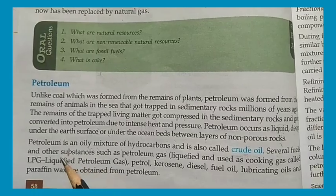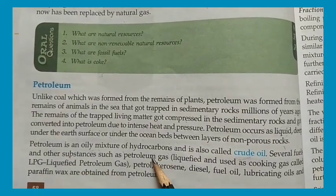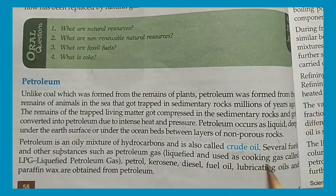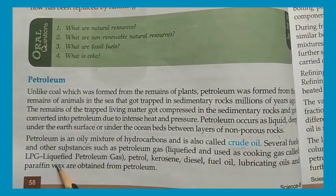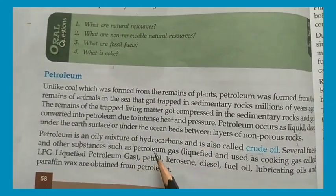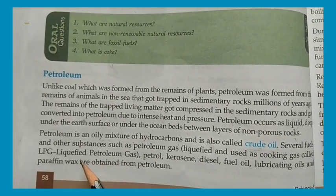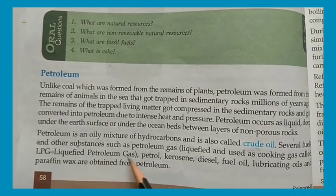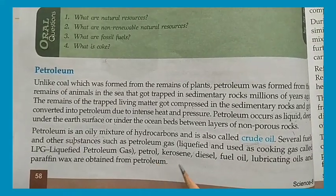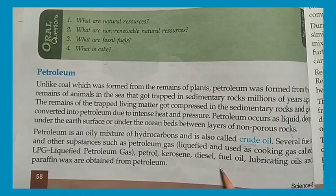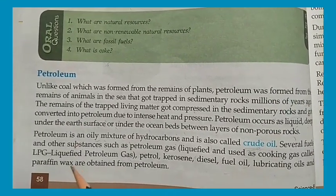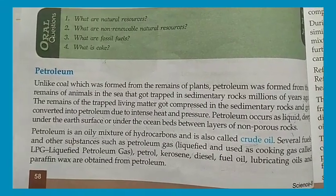Several fuels and other substances are obtained from petroleum. The cooking gas we use is called LPG — Liquefied Petroleum Gas. Petroleum can also be used to obtain petrol, kerosene, diesel, fuel oil, lubricating oil, and paraffin wax.